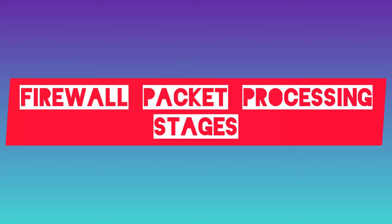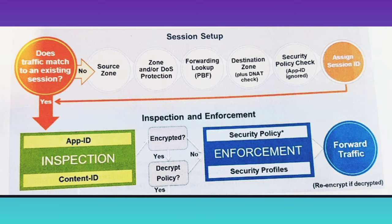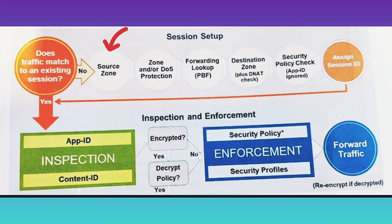Stage 1 is the source zone check. In the source zone check, the firewall determines from which zone the packet is coming. In Palo Alto, firewalls are zone-based firewalls. Zones designate a network segment that has similar security classifications. The firewall security model is focused on evaluating traffic as it passes from one zone to another zone.